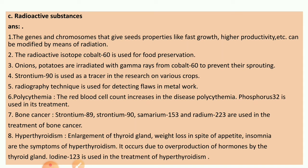Strontium-90 is used as a tracer in the research of various crops. Radiographic technique is used for detecting flaws in metal. In the disease polycythemia, the red blood cell count increases; phosphorus-32 is used in its treatment. Strontium-89, strontium-90, samarium-153 and radium-223 are used in the treatment of bone cancer. Iodine-123 is used in the treatment of hyperthyroidism, which is caused by overproduction of hormones by the thyroid gland.